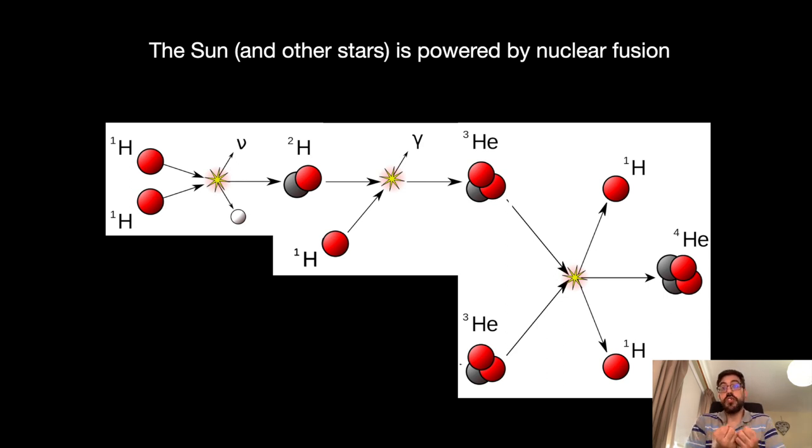As more and more helium is produced, the star will start to change, and at some point, its core will consist mostly of helium. At that point, a new set of reactions will kick off, converting helium into carbon, nitrogen, and oxygen.